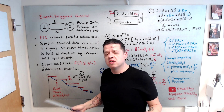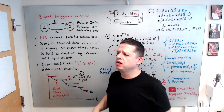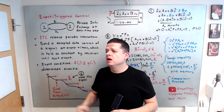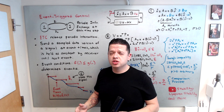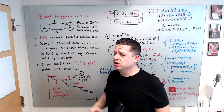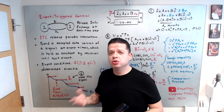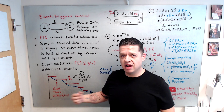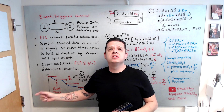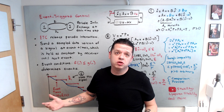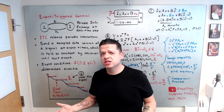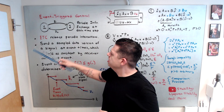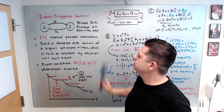Periodic exchange is not always necessary. For example, if my daughter is doing her homework, I don't need to ask her at every time step whether she's done it. I would rather interact with her only when she is not doing the homework. So periodic information exchange is not necessary. This is where event-triggered control (ETC) comes in — it relaxes these periodic interactions.